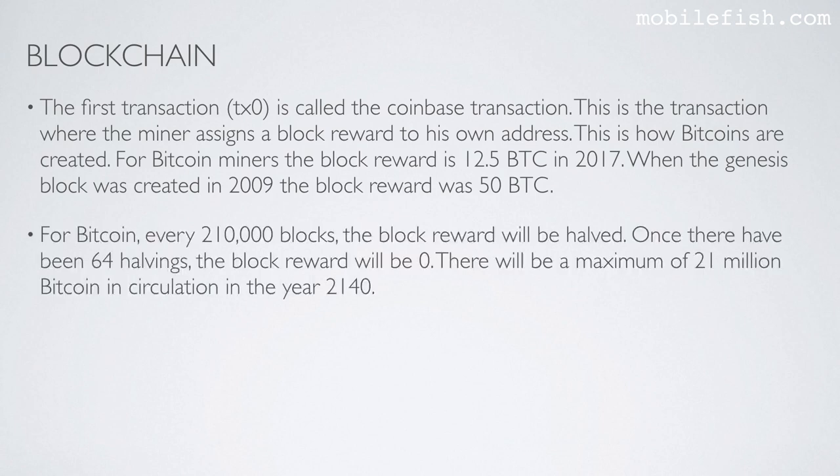For Bitcoin, every 210,000 blocks the block reward will be halved. Once there have been 64 halvings, the block reward will be zero. There will be a maximum of 21 million Bitcoin in circulation in the year 2140.